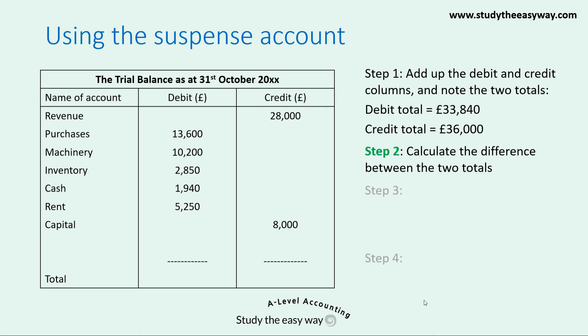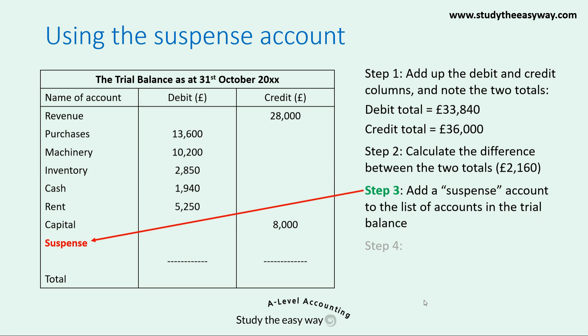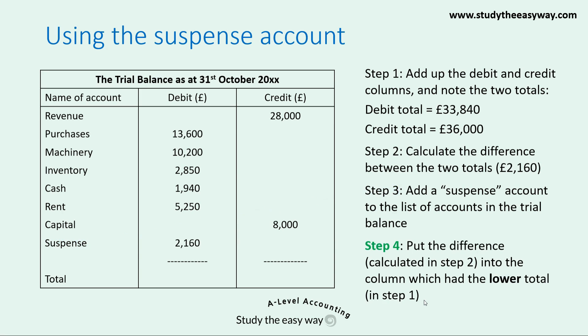In step two we calculate the difference between the two totals. £36,000 minus £33,840 is a difference of £2,160. In step three we add a suspense account to the list of accounts in the trial balance, as shown here in red. In step four we put the difference of £2,160 into the column which had the lower total — the debit total of £33,840 — so I've put the £2,160 into the debit column.